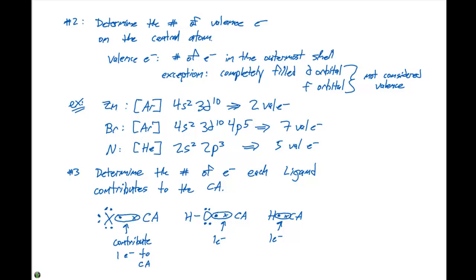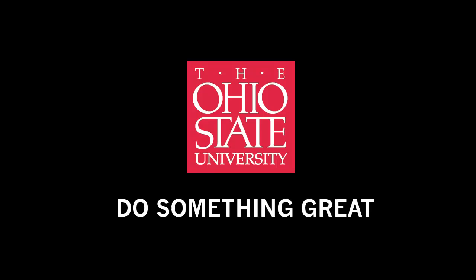If we looked at something like oxygen or anything in the oxygen group, such as sulfur, oxygen has six valence electrons. It is very electronegative, so when it forms a bond, it needs both of the electrons from the central atom. So when oxygen forms a bond, both electrons come from the central atom. We can say that in terms of the bonding contribution, oxygen is going to contribute zero electrons to that central atom.